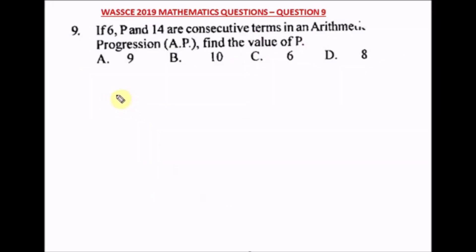Question nine of the WAEC 2019 mathematics past question. If 6, p, and 14 are consecutive terms in an arithmetic progression (AP), find the value of p. Remember: in AP, the common difference d is constant. So p − 6 must equal 14 − p.